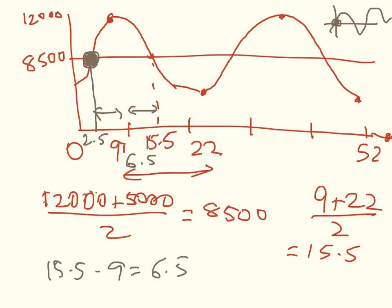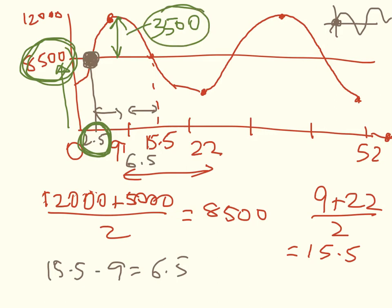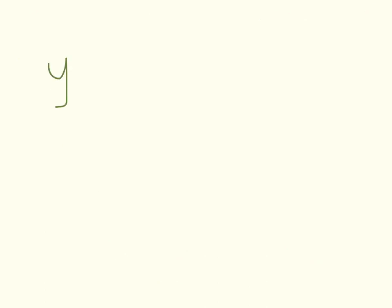That means I can write out three of the four stretch or shift factors. The vertical shift is 8,500, the amplitude which is the distance from the midline to the top is 3,500, and my sine curve has been shifted along by 2.5. These are three of the four numbers that have to go into the equation. We're going to have y equals A sin(B(x + c)) + D.